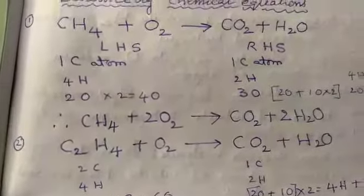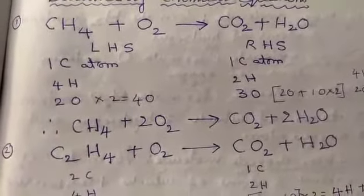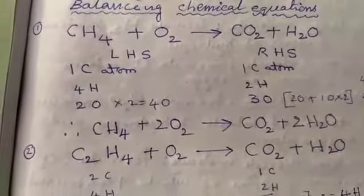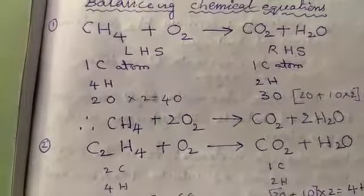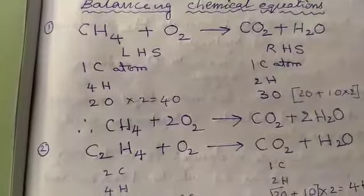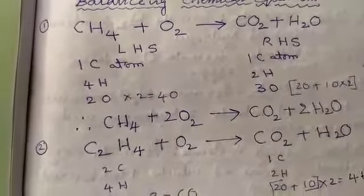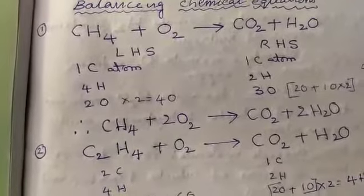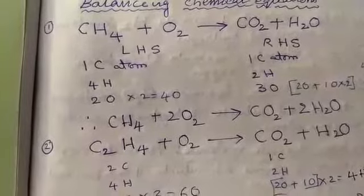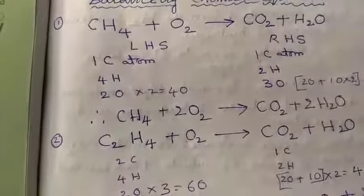Therefore, CH4 plus 2O2 gives CO2 plus 2H2O. What we have done? O2 is one molecule of oxygen, multiplied by 2. And on the right-hand side, one water molecule is multiplied by 2, giving 2H2O.